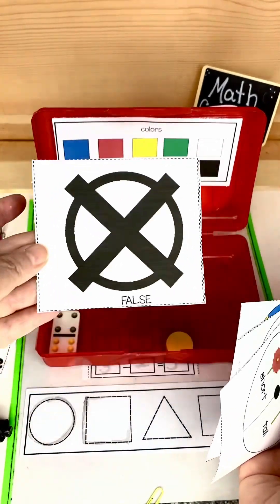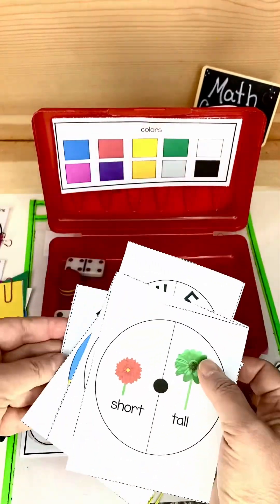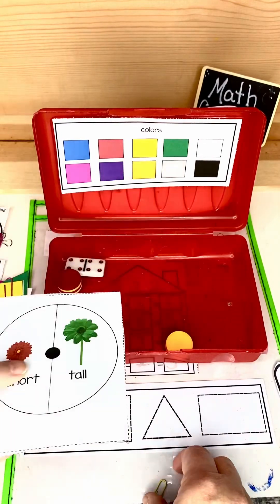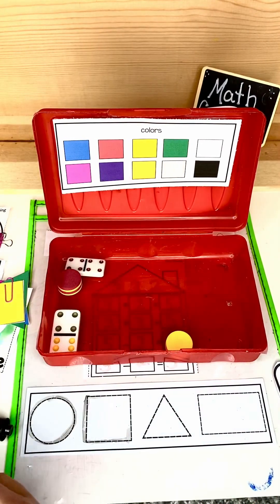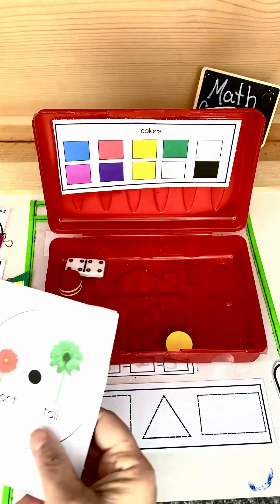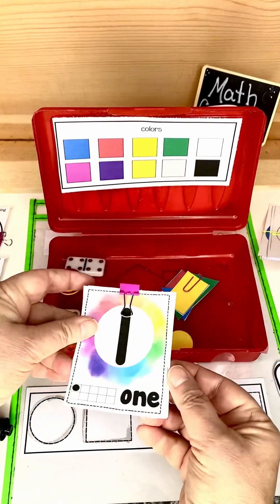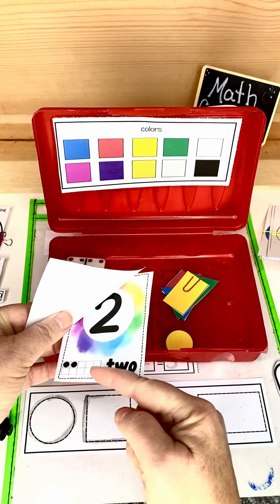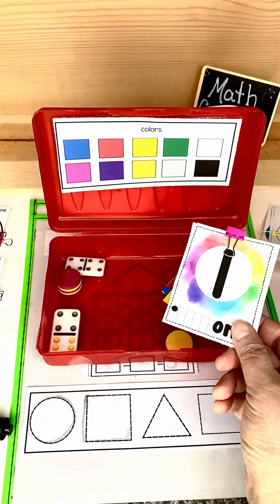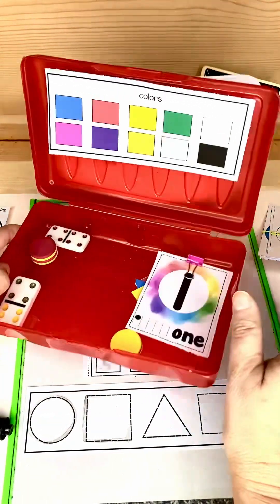You've got true and false that the kids can use to tell you if they think something's true and false. They can hold it up. You've got numbers with the little 10 frame down below and the 20 frame down below.